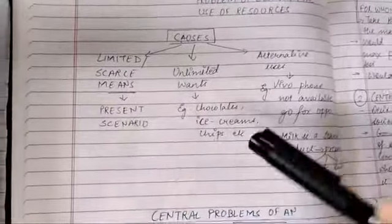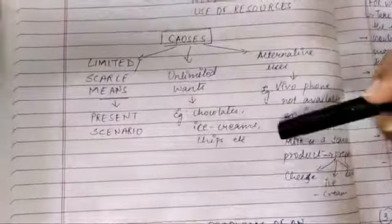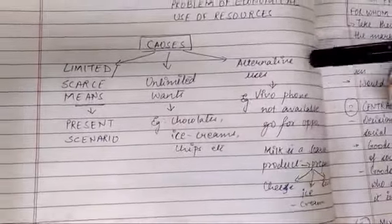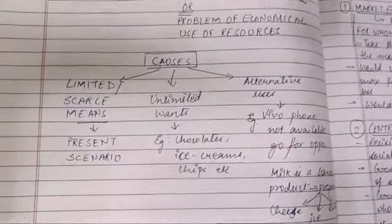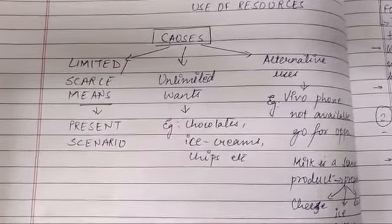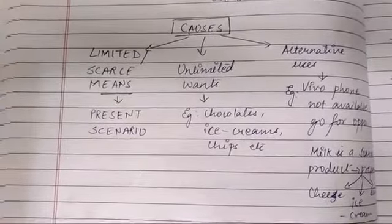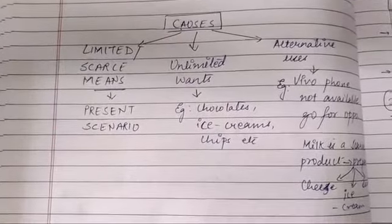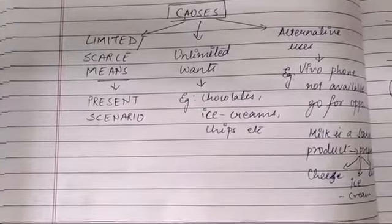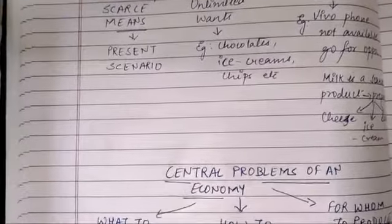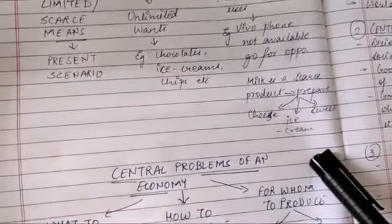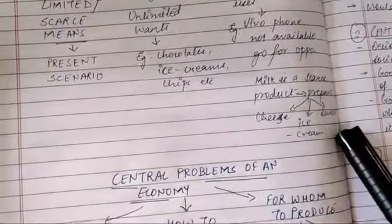The second cause is unlimited wants — the cravings we have for chocolates, ice cream, chips, pizzas, and different varieties of items. Third is alternative uses. For example, suppose you are using the Samsung J Plus series and you want an iPhone but it is not available, so you will go with some alternative phone. Even milk is a scarce product — it can be used to make cheese, ice cream, or sweets.